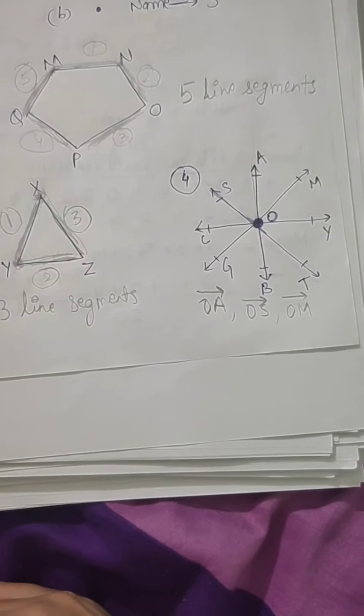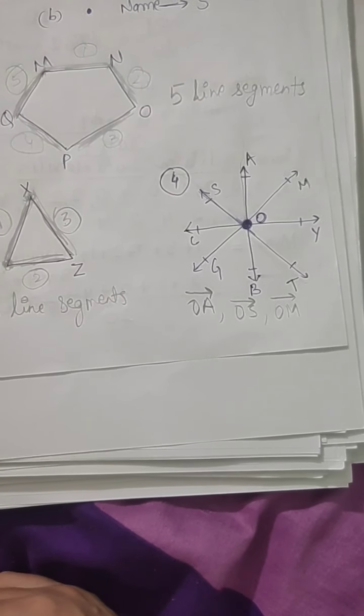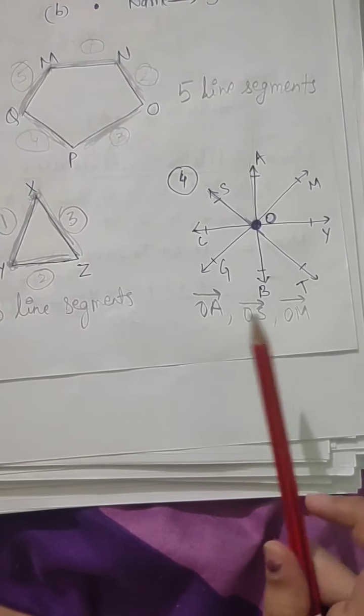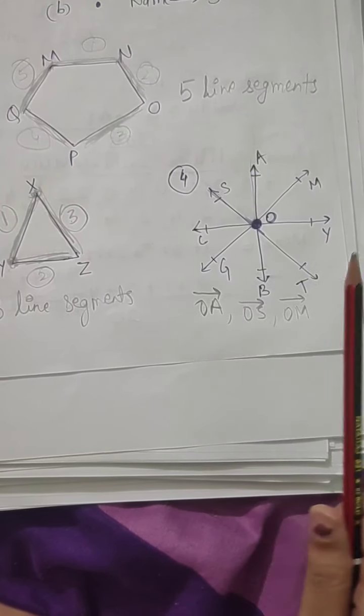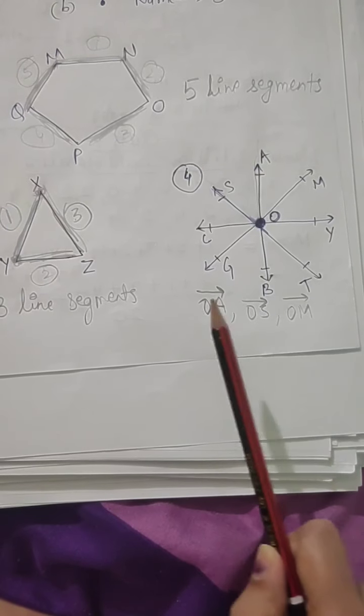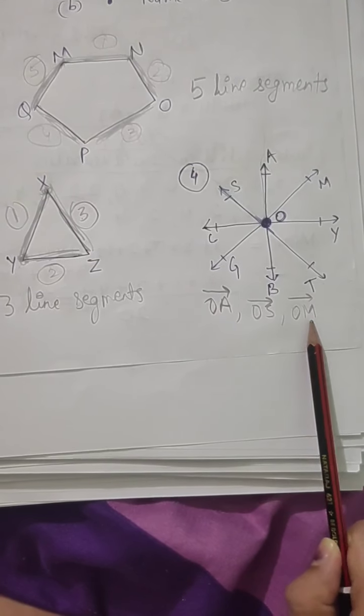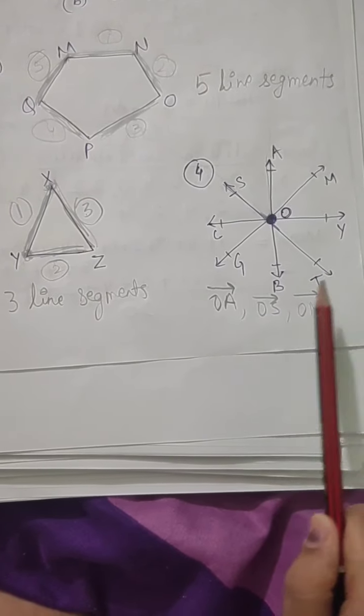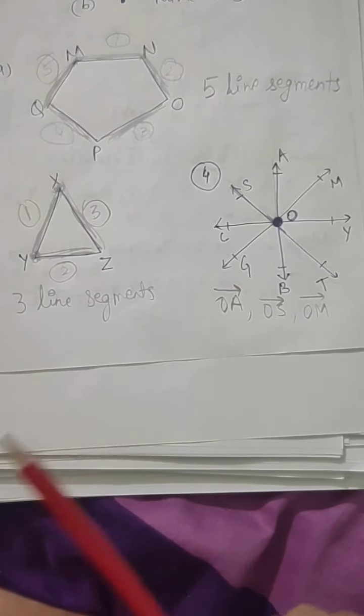So similarly there are so many rays: OY, OT, OB, OG, OC. These are the rays. What you have to do is, you will stop this video here, pause this video here, and what you will do is you will just write the names of the other five rays. I have written the names of three rays. You don't have to write these. You have to write the names of the five remaining rays.